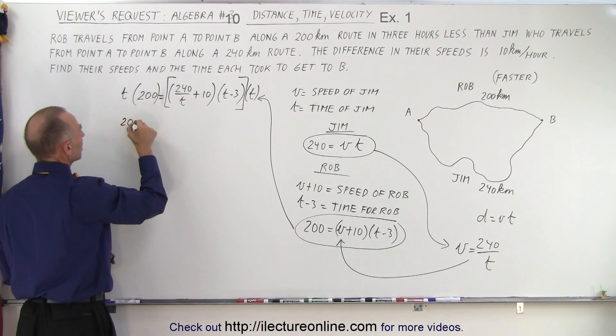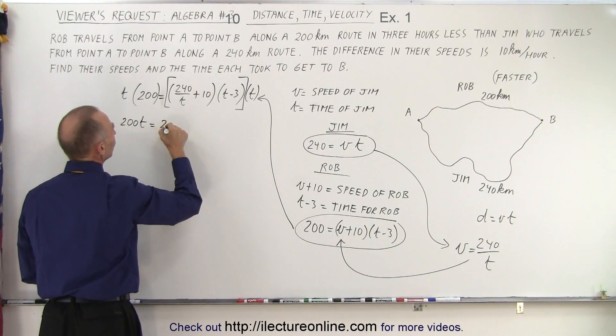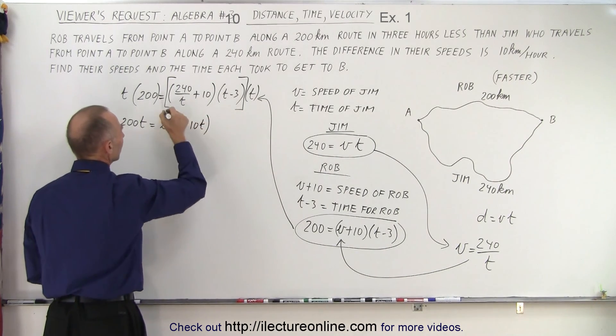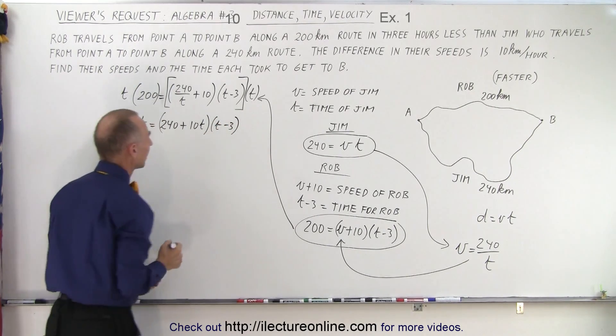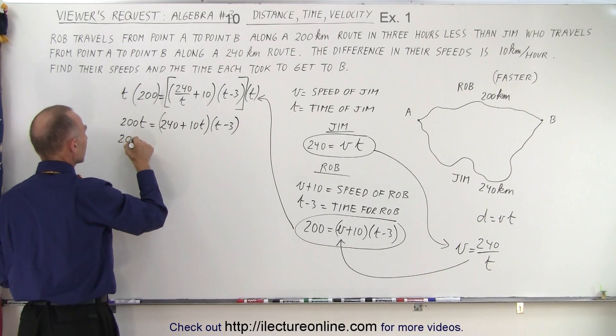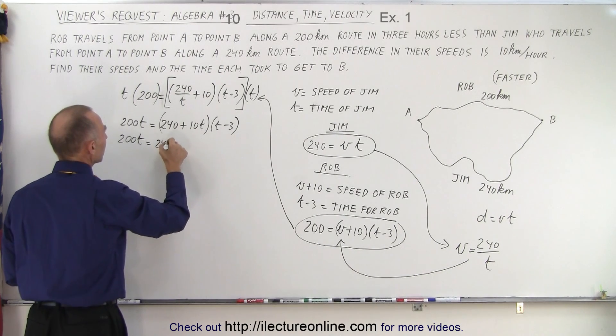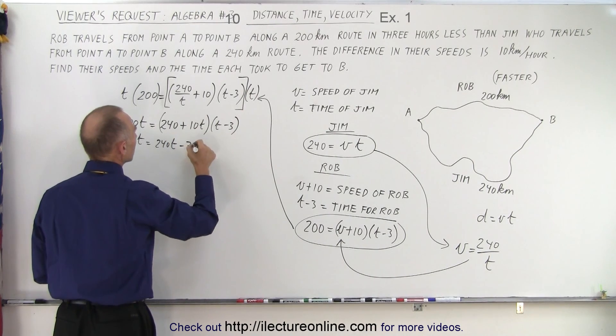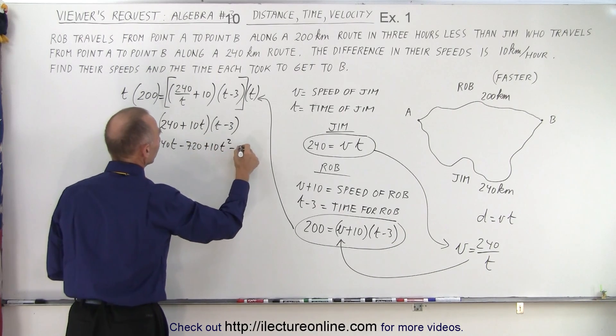So on the left side we get 200T equals, T times T cancels out so we get 240 plus 10T, we still have the parentheses, times T minus three. And now I can multiply that out and I will end up with a quadratic equation. So I get 200T equals 240T minus 720. This times this gives me plus 10T squared and this times this gives me minus 30T.